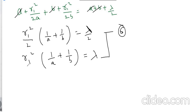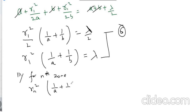This is for the first zone. Similarly, for the nth zone: Rn² × (1/A + 1/B) equals nλ. This is equation 7.